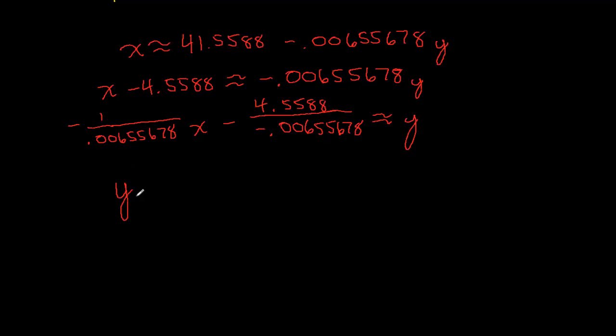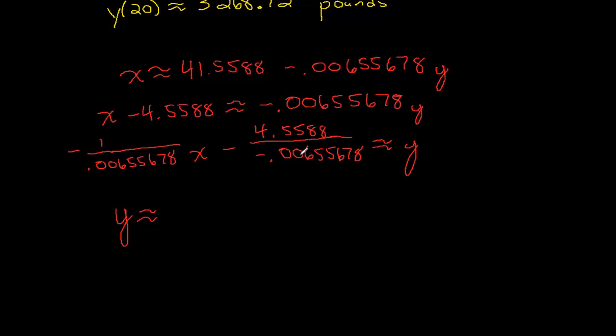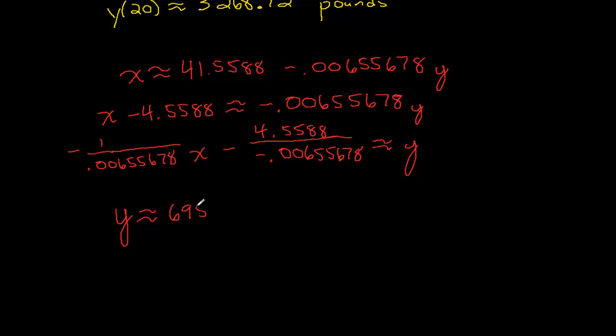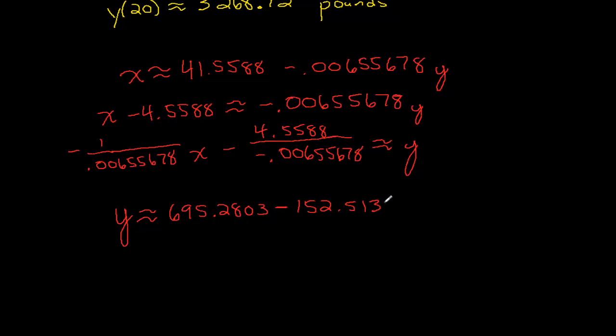On the right side I'll just end up with y. If we write it more traditionally where y is on the left, first I'll take 41.5588 divided by 0.00655678 and we get about 695.2803. I had negative divided by negative so that gives me positive. This next one is negative, so I have 1 divided by 0.00655678, giving me about 152.5139x.